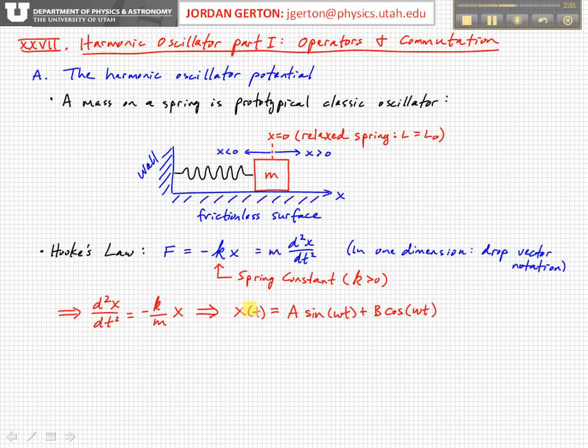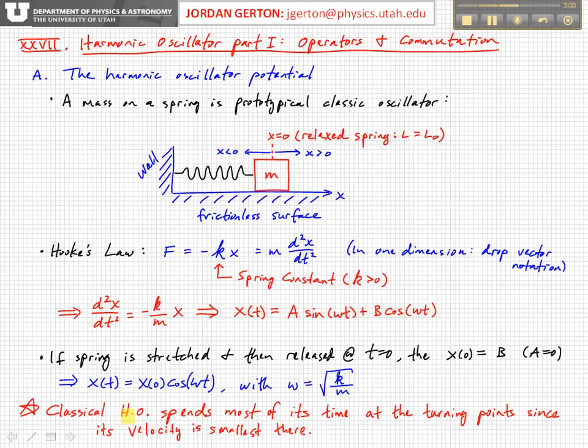The general form of the solution in this case is A sine omega t plus B cosine omega t, so we get oscillatory solutions. From boundary conditions or initial conditions, we can usually get rid of one of these. For example, if the spring is stretched and released at time equals zero.